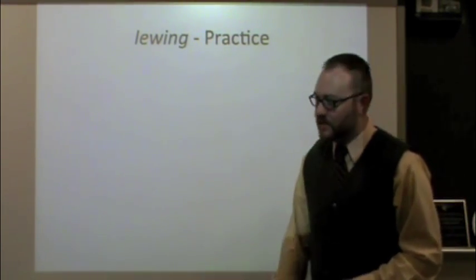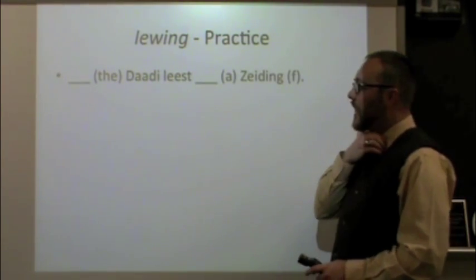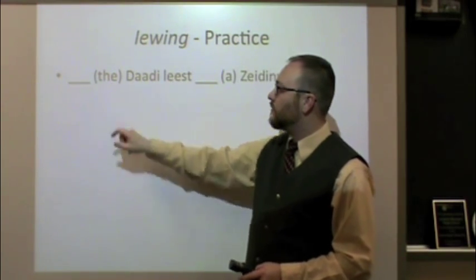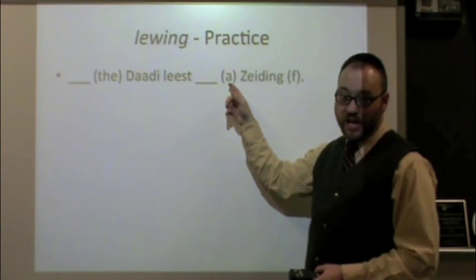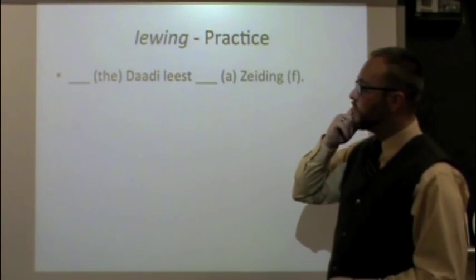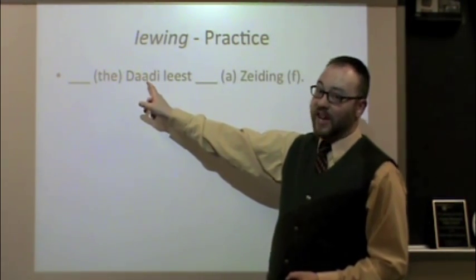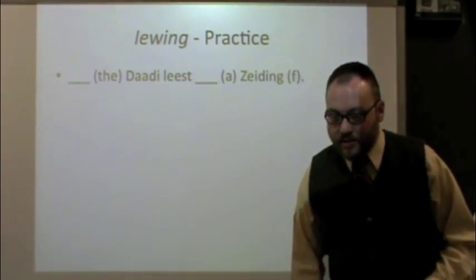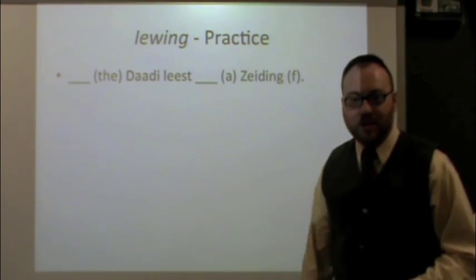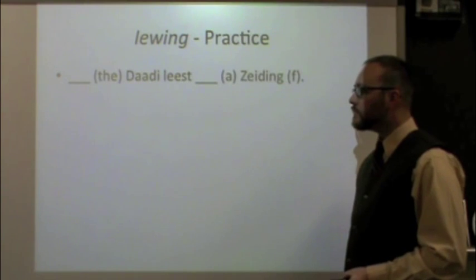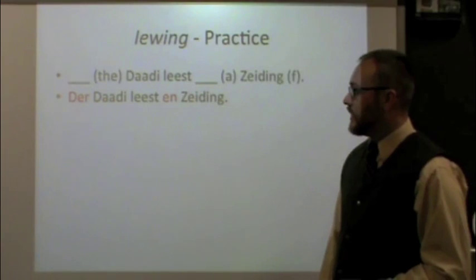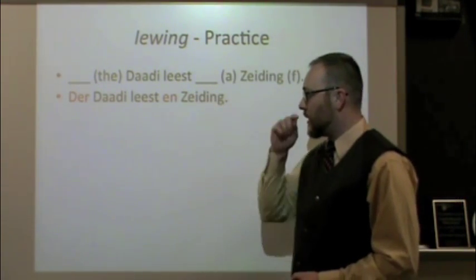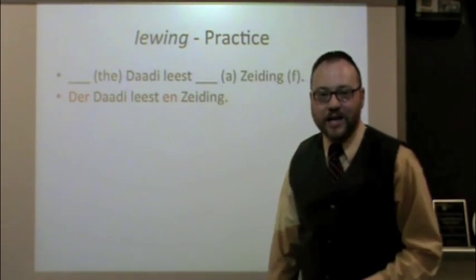Let's take everything we've covered and practice a bit. Here's a sentence with blanks — provide the correct word. First, give the correct form of 'the' (definite article) up front, and the correct form of 'a' (indefinite article) in the back. The noun 'Zeitung' is feminine. So: 'Der Daadi liest en Zeitung.' The subject is 'Der Daadi' (nominative), and 'Zeitung,' our direct object, is accusative. 'Der Daadi liest en Zeitung' — the dad is reading a newspaper.